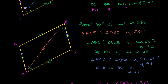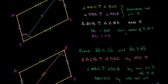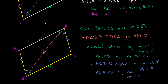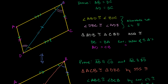So we've shown that if you have a parallelogram, opposite sides have the same length, and if opposite sides have the same length, then you have a parallelogram. We've proven it in both directions, so we can make an if-and-only-if statement: opposite sides of a quadrilateral are parallel if and only if their lengths are equal.